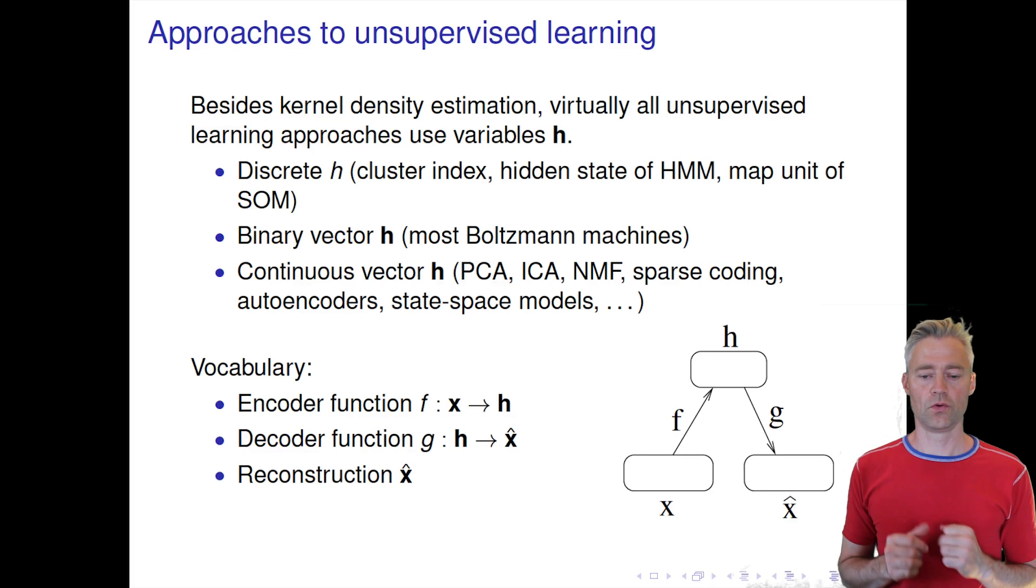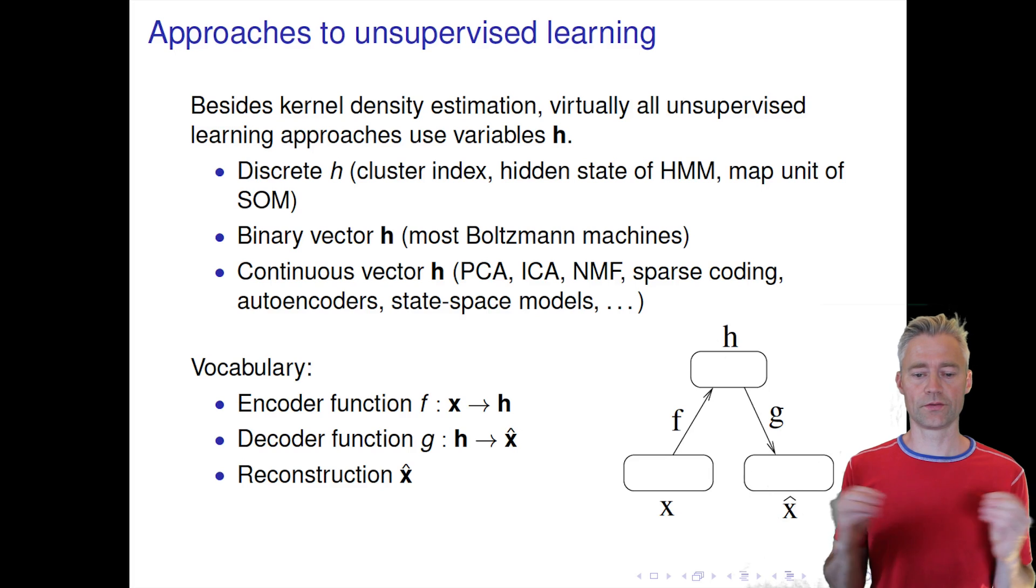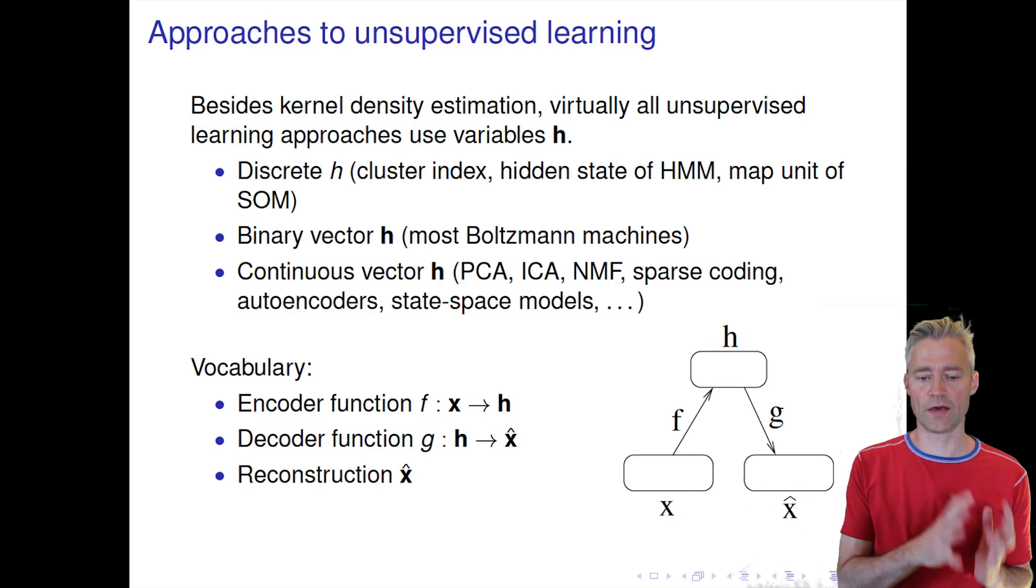In the Boltzmann machine, the latent state is a vector of binary variables. In principal component analysis, independent component analysis, non-negative matrix factorization, sparse coding, autoencoders, and state-space models, we have a latent variable which is a continuous vector.